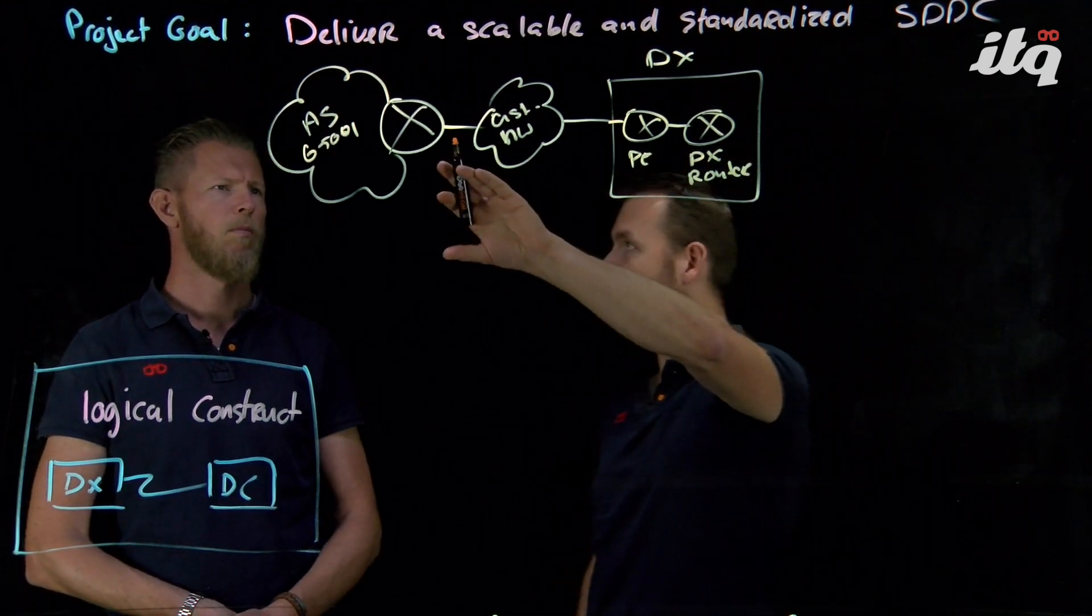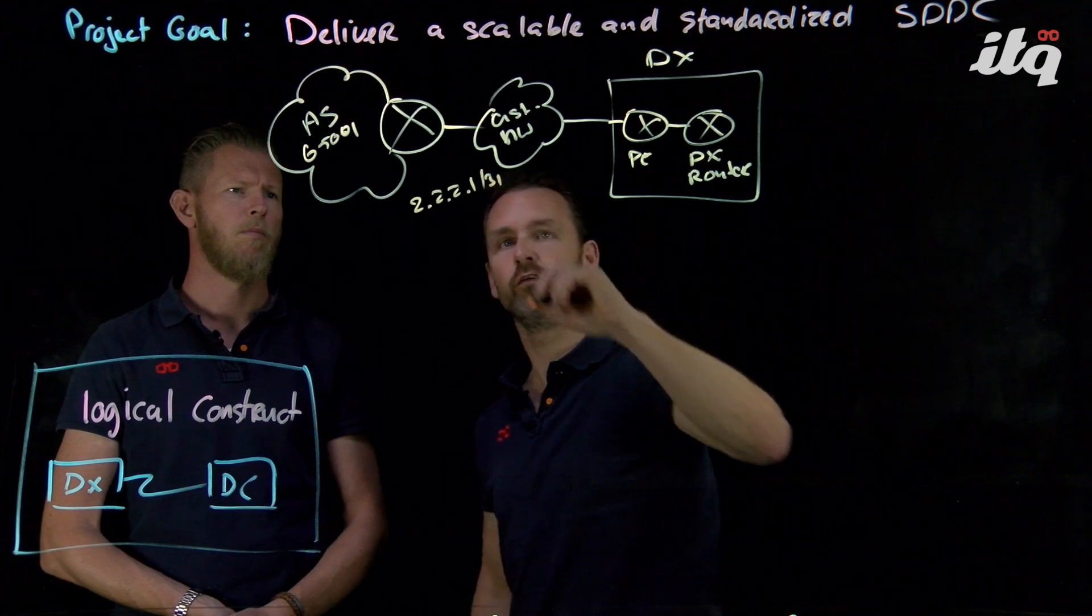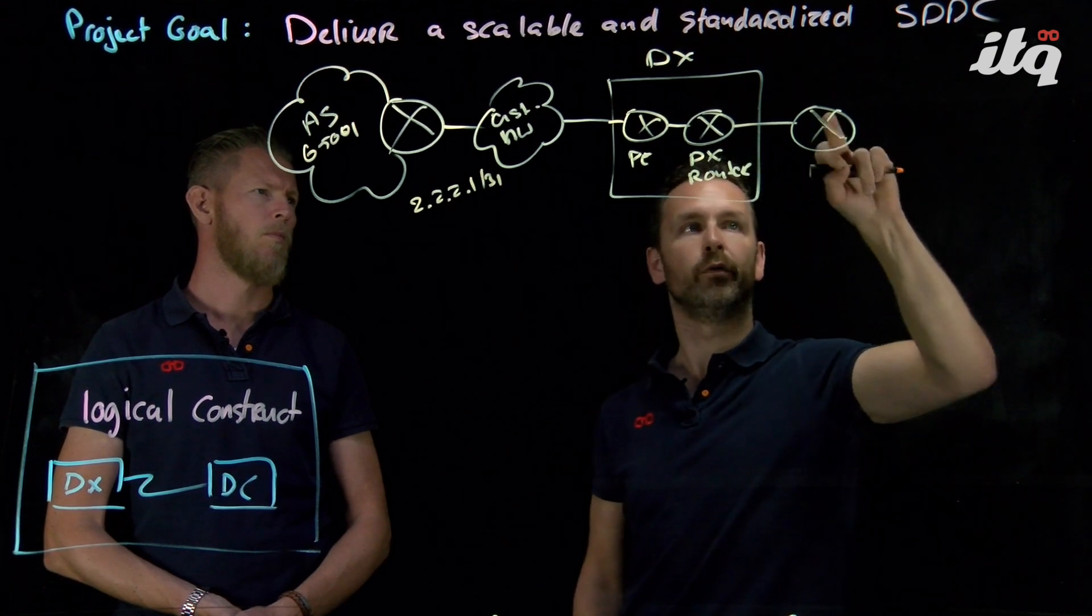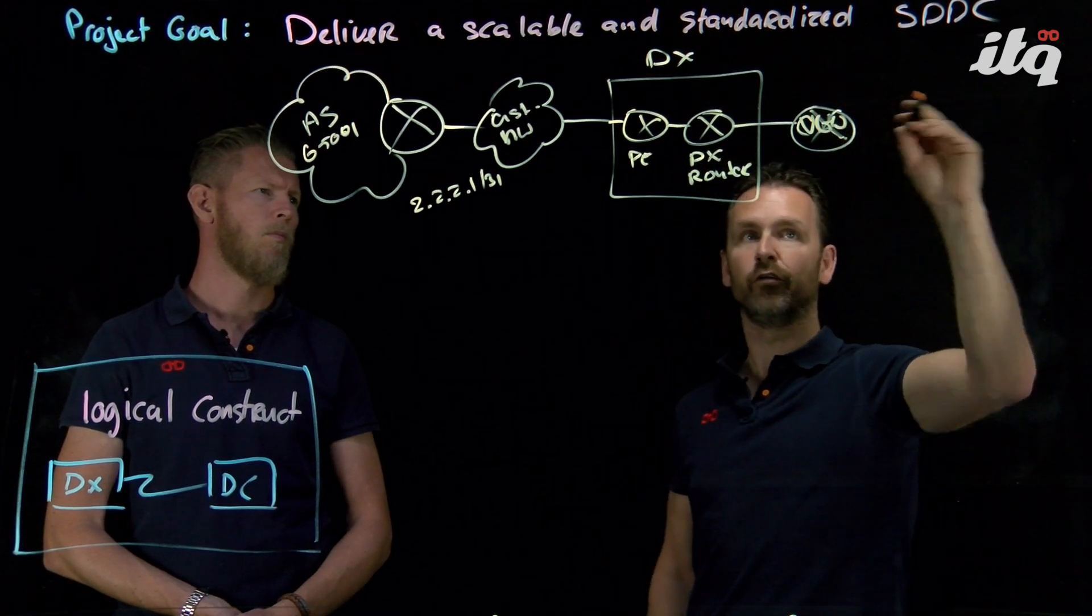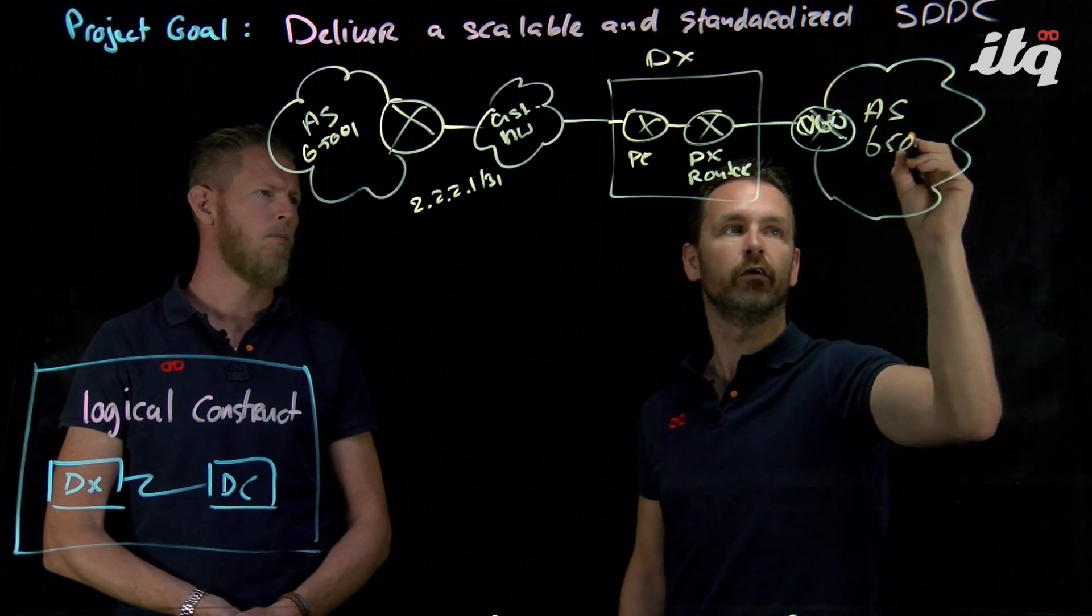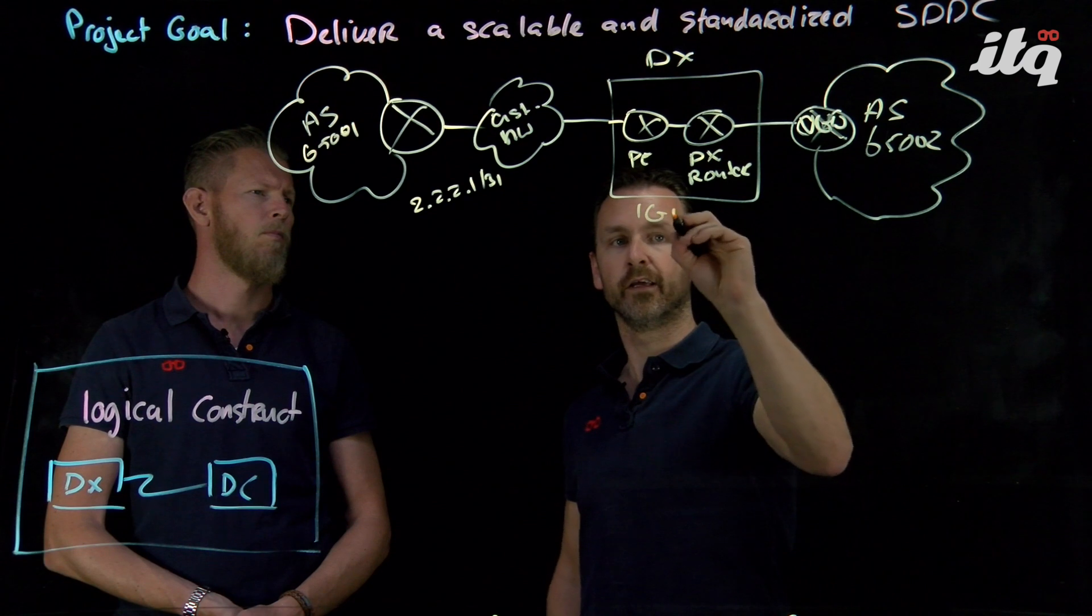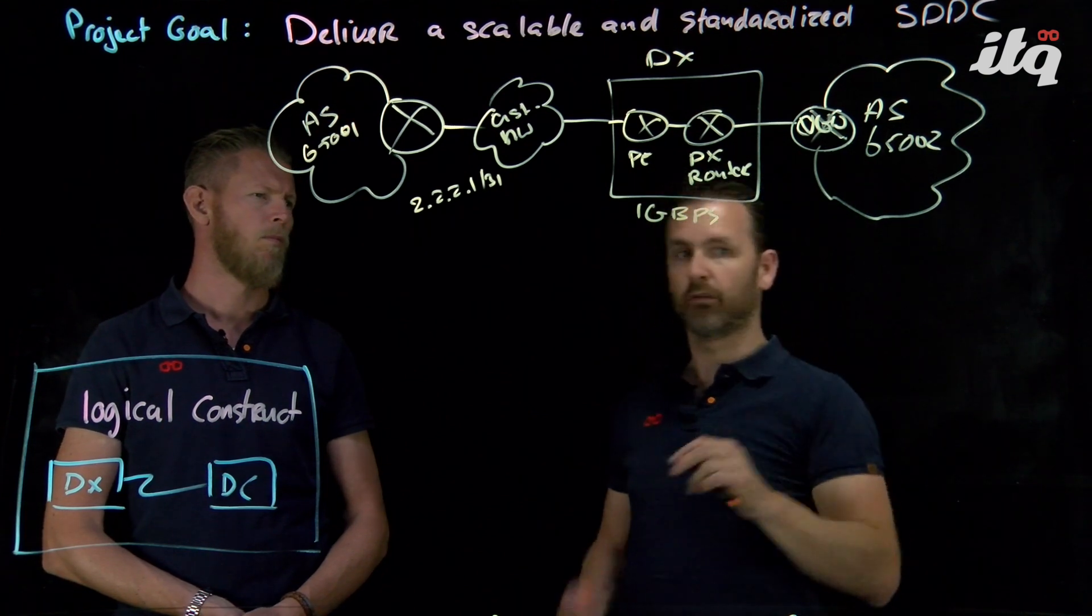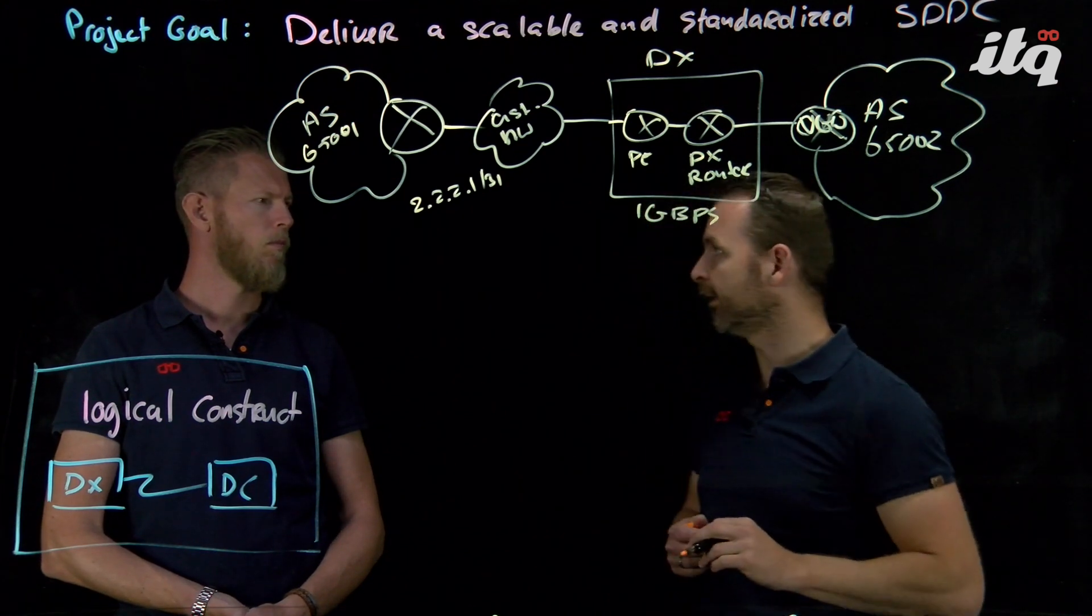So on this side, we will also be needing IP addresses. So putting in some fictitious data here, 2.2.2.1 slash 31. And on this side, we will be connecting to a component that's called the virtual private gateway. And this will eventually connect you to the BGP instance inside of AWS. So this will be AS65002, for example. We're going to consume a 1 gig per second connection. You can choose between a 1 gig or a 10 gig or a hosted connection based on the sizing requirements, the assessment that we did during the discovery phase, resizing it for a 1 gig connection in this case.